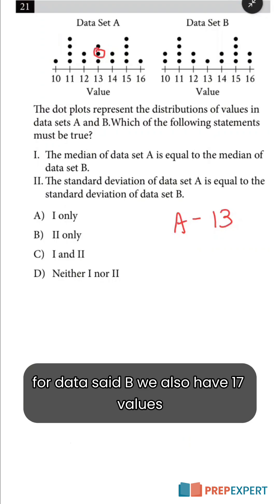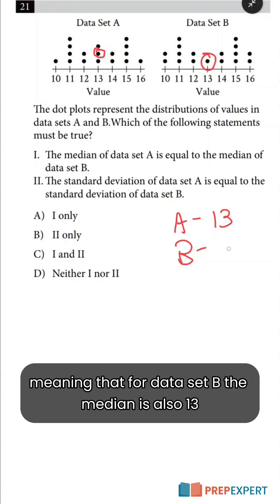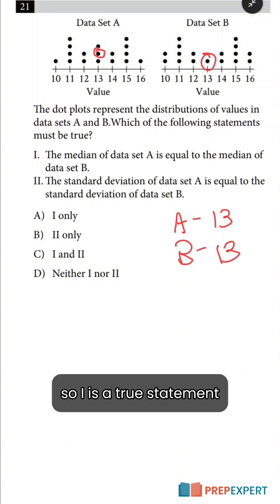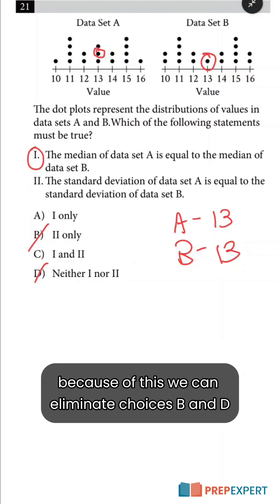For data set B we also have 17 values, so again the median will be our ninth value. The ninth value will be this dot right here, meaning that for data set B the median is also 13, so statement 1 is true. Because of this we can eliminate choices B and D.